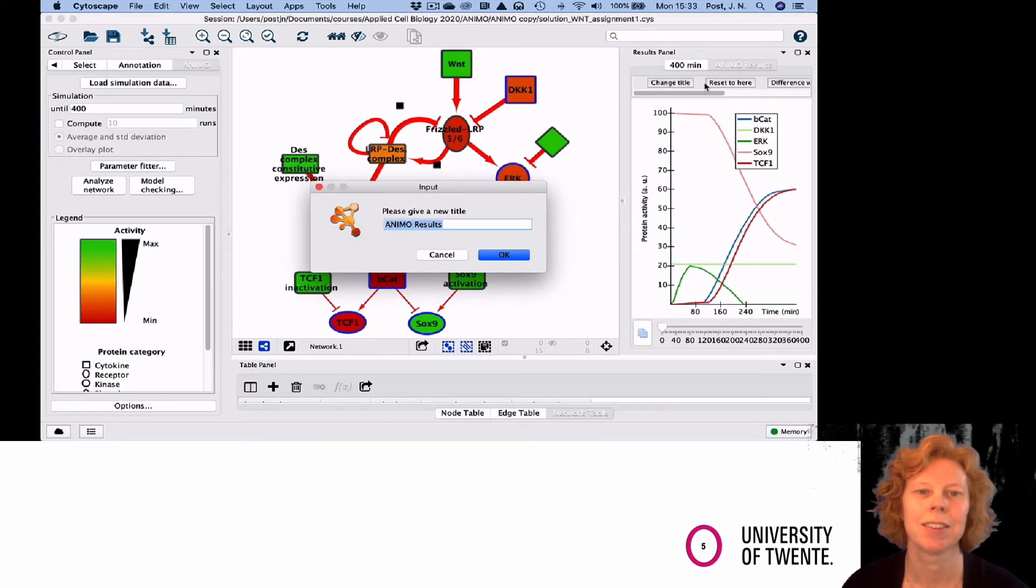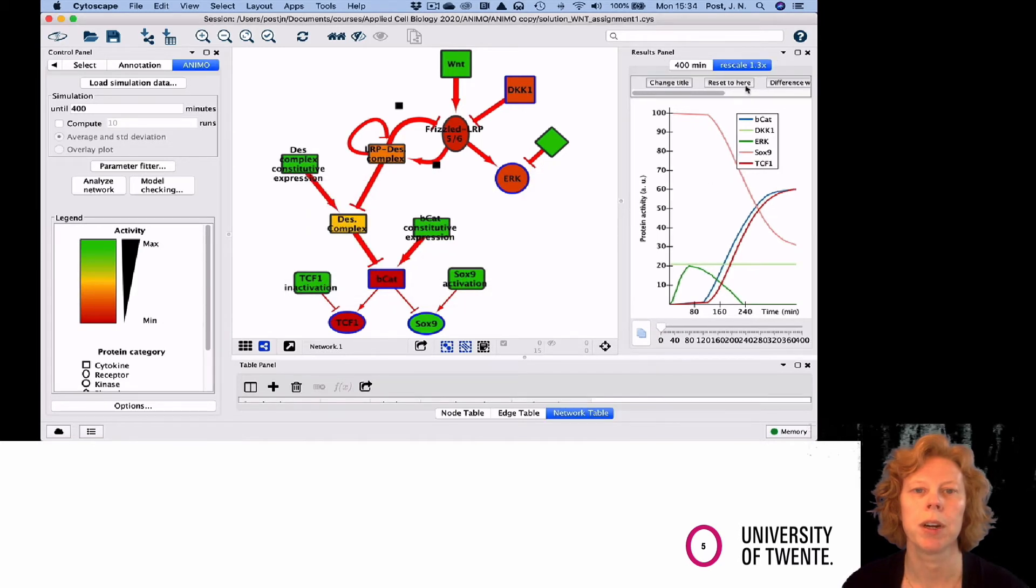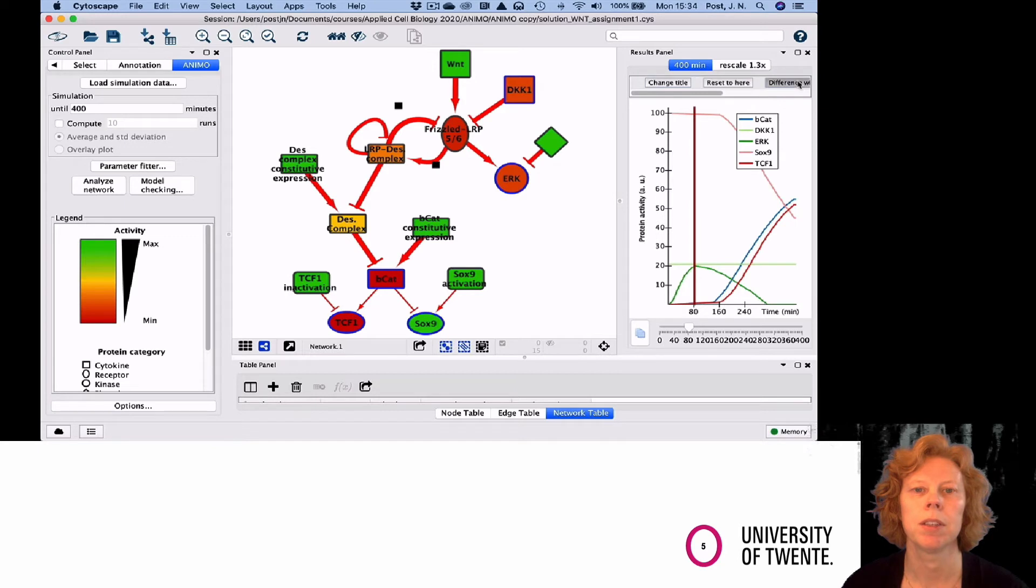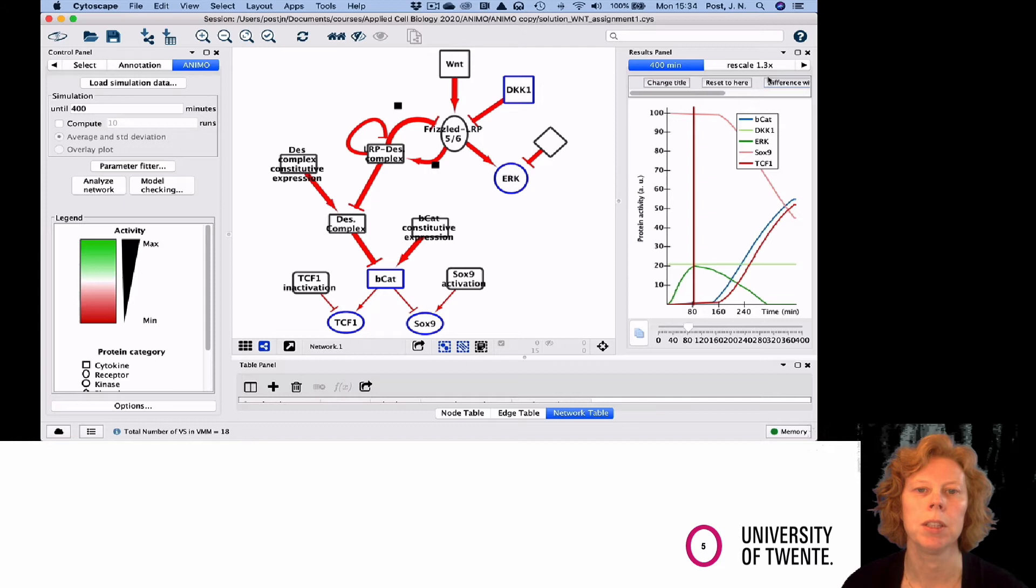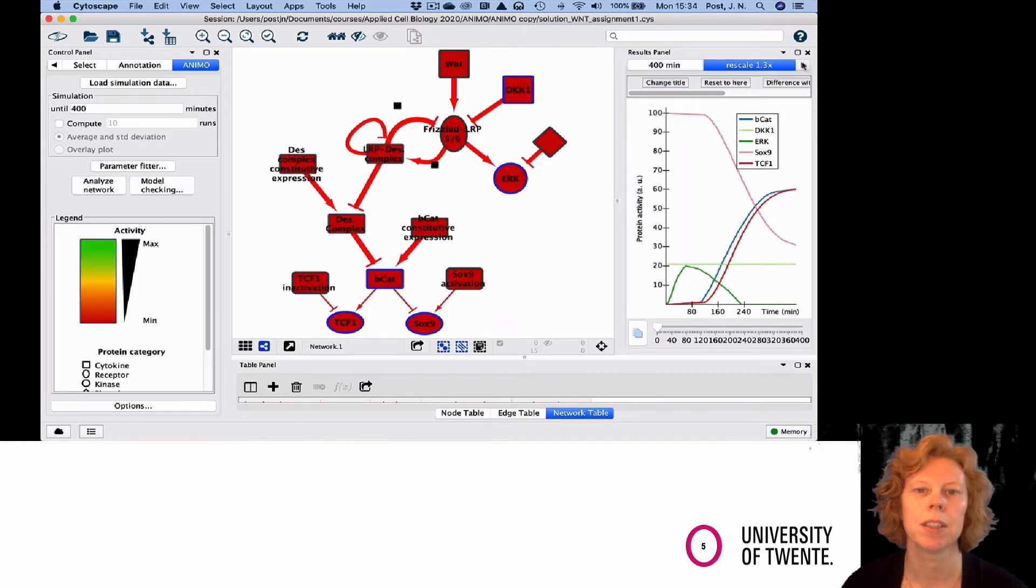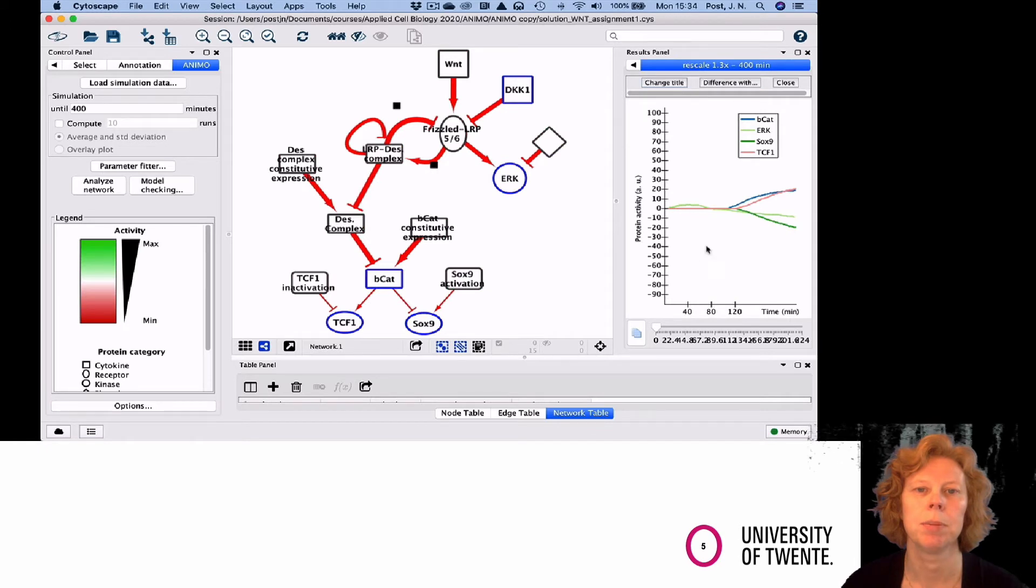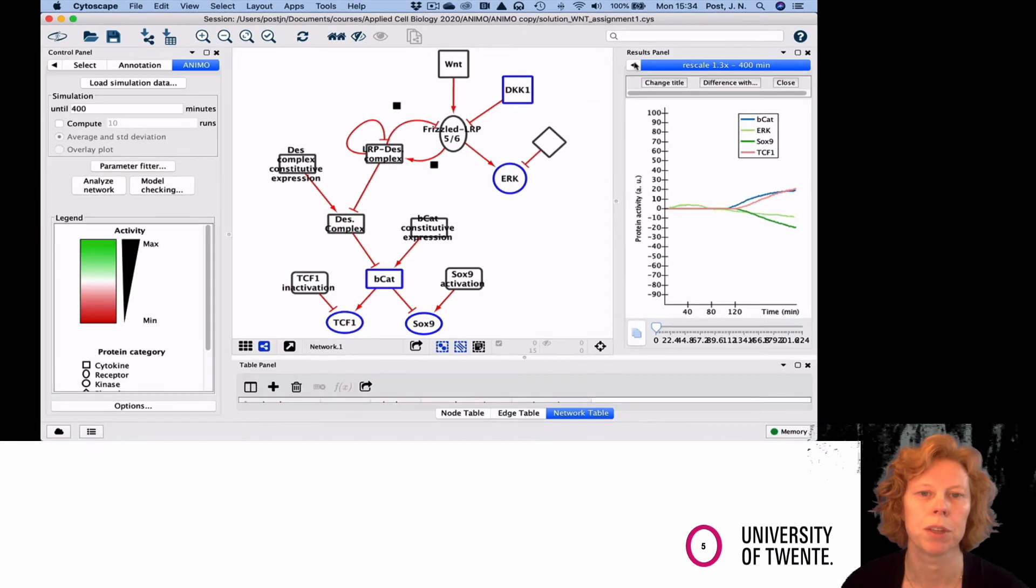I run the model again. To see if anything changes, I'm going to compare the previous data with these using the difference width button. This allows me to see, if I go to that data set, the name is rescale 1.3 minus the 400. So I can tell that there's a slight difference in the timing of the arc activation and a little bit of the amplitude.